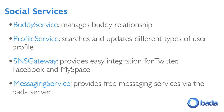Going into a little more detail — the first service is the social service. The namespaces highlighted in blue are the ones you can find from the server namespace. The buddy service manages your buddy relations: you can request new friends, delete friends, and share information among friends. The profile service can search and update different types of profiles, for example your phone numbers and social profiles like your Twitter or Facebook account, and you can share information among those accounts. The SNS gateway is the key namespace providing easy integration for third-party solutions like Facebook. The messaging service provides free messaging via the Bada server, so besides SMS, you can also send free instant-type messages.